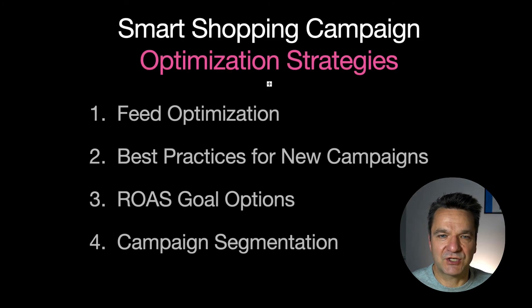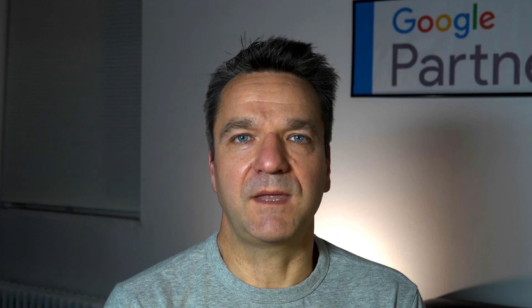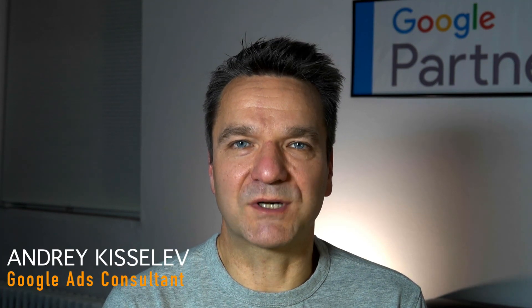There you have it. We looked into four optimization strategies for Smart Shopping campaigns: feed optimization, best practices for new campaigns, ROAS goal options, and campaign segmentation. In the next video, we'll take a closer look at evaluating Smart Shopping campaign performance during the first month — this is important to understand if it's performing well or not. If this is of value to you, like, subscribe, and hit the bell icon to get notified on new videos. Let me know about your experience with Smart Shopping campaigns. Thank you and have a great day.